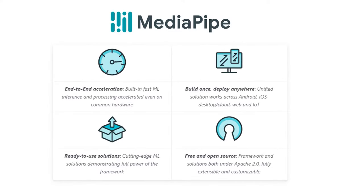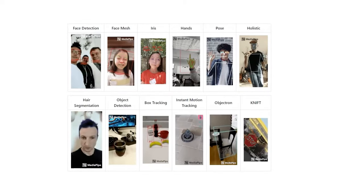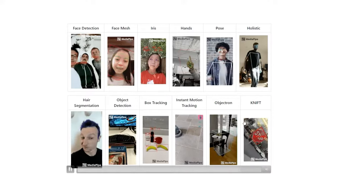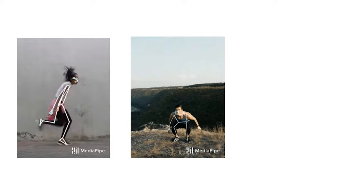We'll be using the MediaPipe library for all of this. MediaPipe is a computer vision library built by Google that lets you use real-time, state-of-the-art computer vision models. You can do face detection, face mesh, iris detection, and many other things. We'll learn to do some of these in upcoming tutorials.